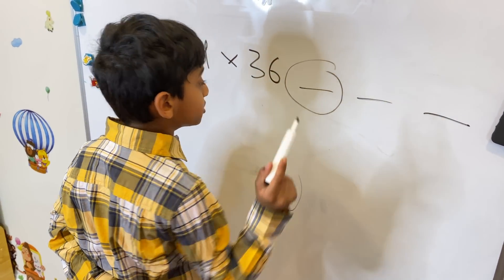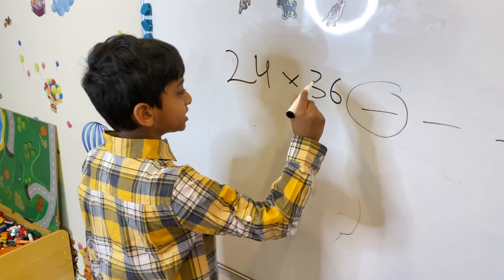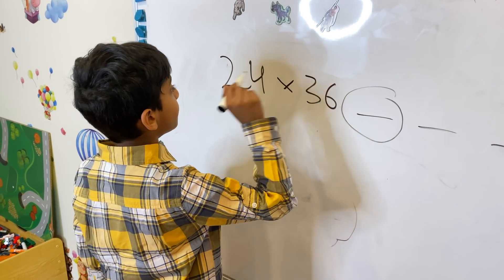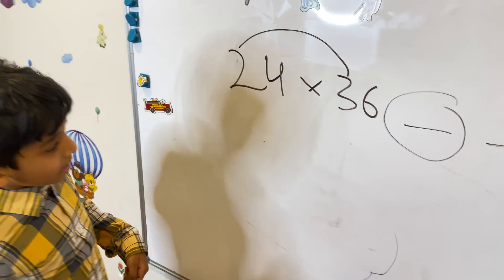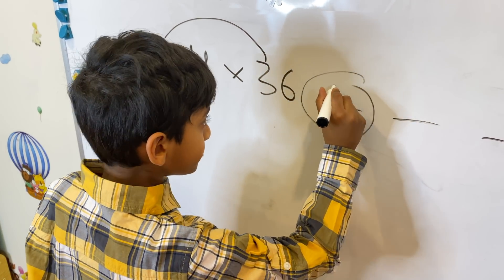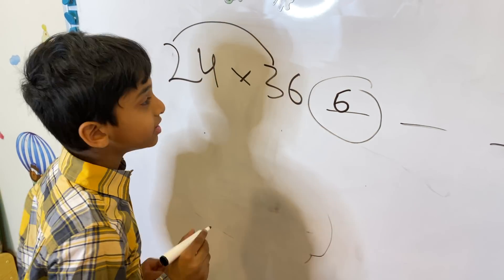For the first number in our answer, we have to do the multiplication of the first 2 numbers, which is 3 times 2. And we all know 3 times 2 is 6. Let's write the 6 here.